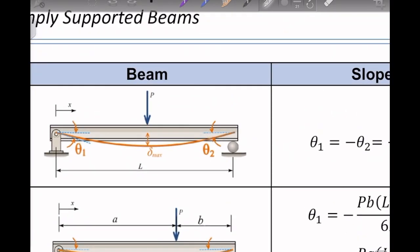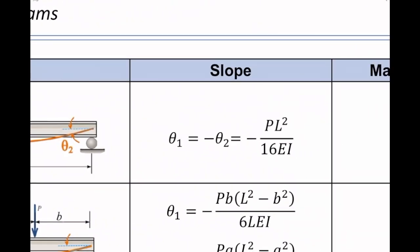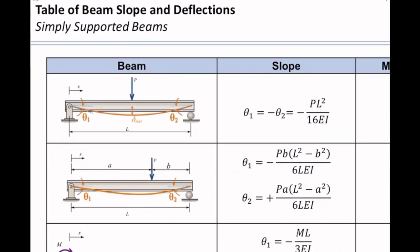For instance, for this beam, which is the beam subjected to a load at its mid-span, we do have slope, which is the magnitude of slope of this beam at two points, at the left and at the right as shown in the figure.